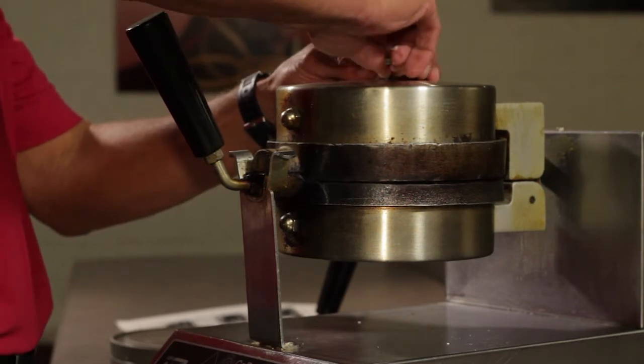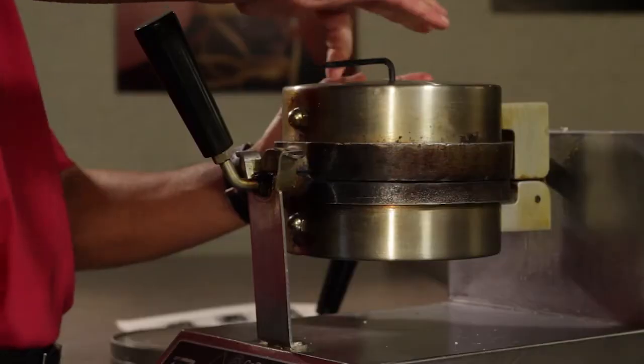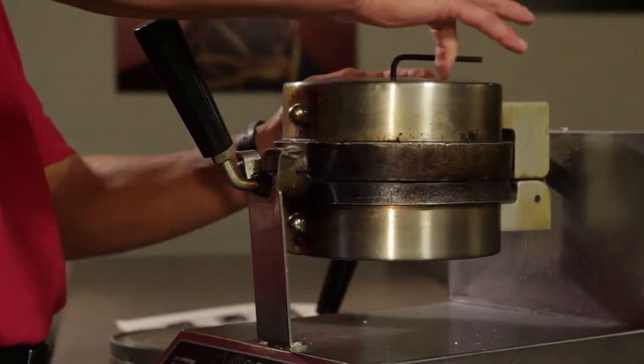Step 4. With allen wrench, loosen bolt by turning counterclockwise until grid clicks and separation is visible. Do not remove bolt from pan. Leave loose grid in place.